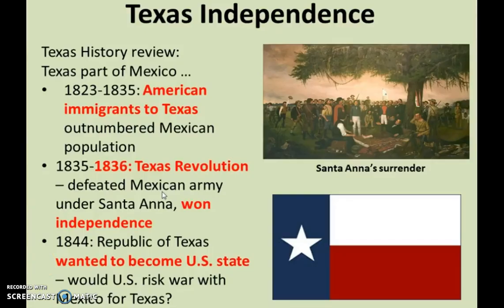Going back to Texas history: Texas was part of Mexico, but during 1823 to 1835, American immigrants came to Texas through the empresario system and soon outnumbered the native Mexican population. The Mexican government, concerned about this growth as noted in the Mier y Terán Report, tried to stop American immigration. This led to the Texas Revolution from 1835 to 1836, where Texans defeated the Mexican army under Santa Anna at the Battle of San Jacinto.